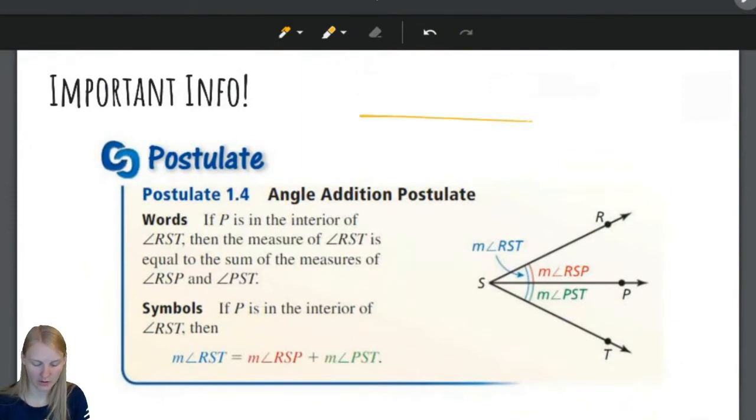The angle addition postulate. Remember our segment addition postulate that said your house is here and the candy store is here. If you've already walked 10 miles to the candy store and you know that it's 15 miles, how many more miles do you have left to walk to the candy store? And you said, Ms. Dodge, of course, 10 plus 5 gives me 15. You would be correct.